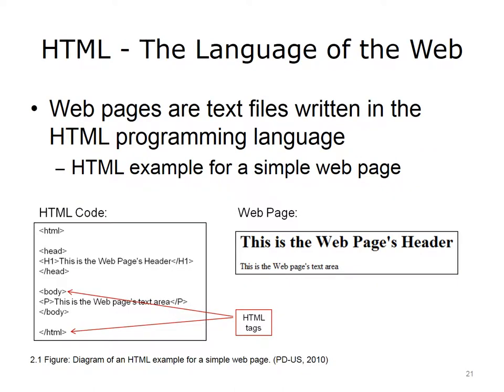HTML is the language of the web. Web pages are text files written in the HTML programming language. An example of HTML is shown in the figure on the left side of this slide — notice the HTML tags enclosed in brackets. This code outputs the web page shown on the right side of the slide. To reproduce the web page output, all you would have to do is type the HTML code into a notepad document, save the document with the file extension HTM or HTML, then double-click on the file to open it.